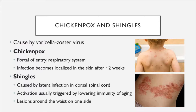Shingles usually presents as lesions around the waist and torso on one side of the body—an asymmetrical presentation. Interestingly, shingles is contagious as chickenpox: if someone is not immune to chickenpox, either through previous infection or vaccination, and they are exposed to someone who has shingles, they can develop chickenpox. One way to avoid ever getting shingles is to get the chickenpox vaccine, which will prevent you from getting chickenpox and developing this latent infection.